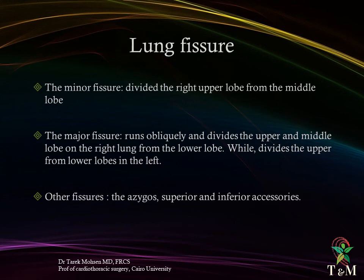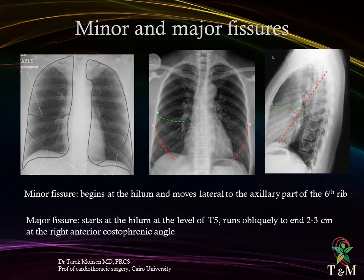Other fissures include the azygos vein fissure, the superior and inferior accessory fissures. The minor lung fissure begins at the hilum and moves laterally to the axillary part of the sixth rib. The major fissure starts at the hilum at the level of T5, runs obliquely, and ends 2 to 3 centimeters above the right costophrenic angle.